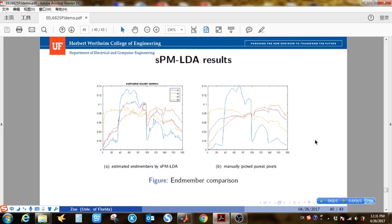So next step is I made a supervised label set for sPM-LDA and I repeat the same experiment. So since there is supervision, the algorithm converges faster than PM-LDA and the estimated end-members are smoother. So you can see they are very similar spectrally.